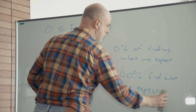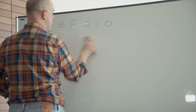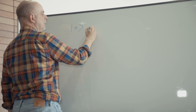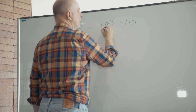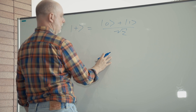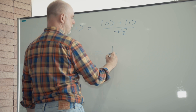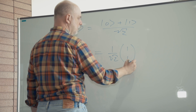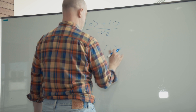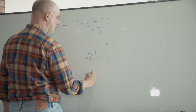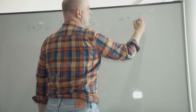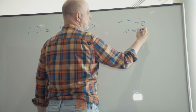For example, if you started with the plus state — just the simple plus state — that equals |0⟩ plus |1⟩ over the square root of 2. This equals our vector (1/√2, 1/√2). If we call the amplitudes alpha and beta as we've done for a single qubit, that means alpha equals 1 over the square root of 2 and beta also equals 1 over the square root of 2.